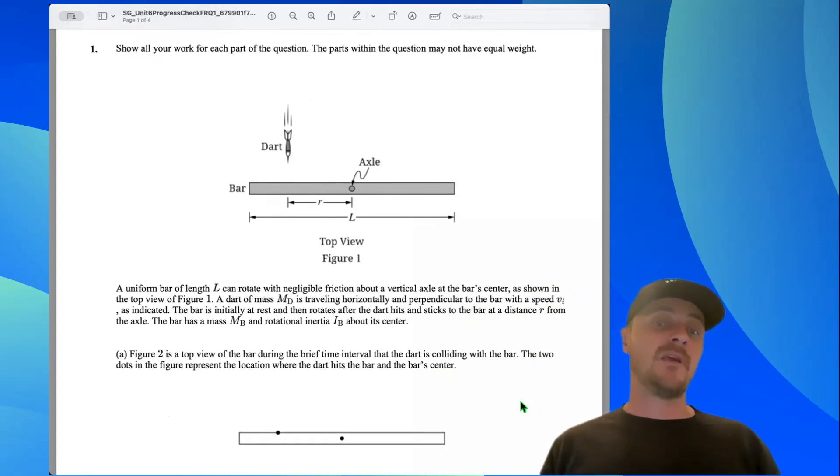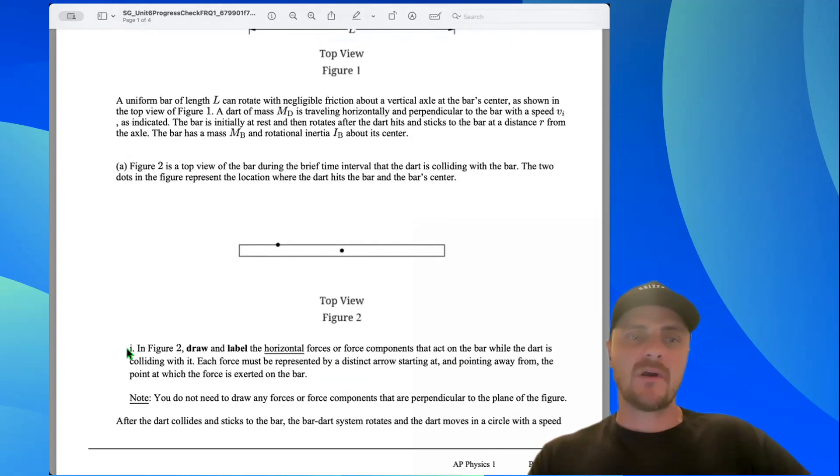The bar has a mass mb and a rotational inertia ib about its center. In part A, Figure 2 is a top view of the bar during the brief time interval that the dart is colliding with the bar. The two dots in the figure represent the location where the dart hits the bar and the bar's center.